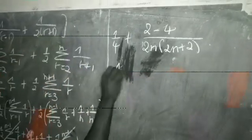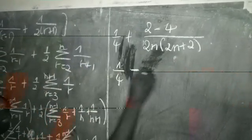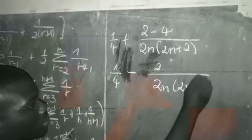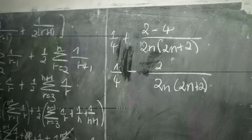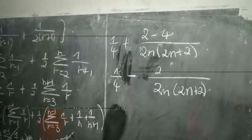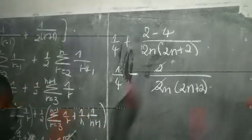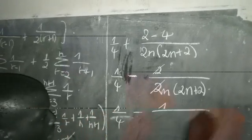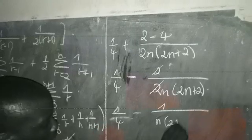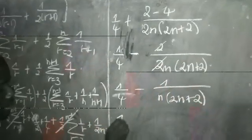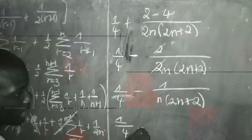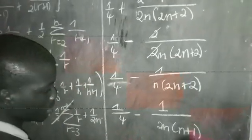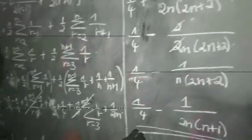This will give me 1 all over 4 minus 2 all over 2n times 2n plus 2. Simplifying this one — canceling the 2 — will give me 1 on 4 minus 1 divided by n times 2n plus 2. Factorizing these two out, I am obtaining 1 all over 4 minus 1 all over 2n times n plus 1, as required by the proof.